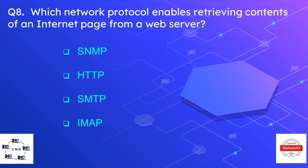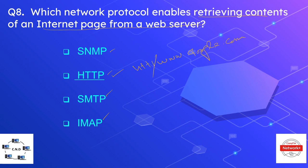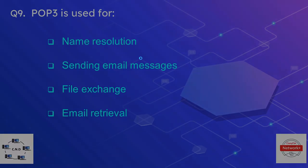Question number eight is: which network protocol enables retrieving contents of an internet page from a web server? The options are SNMP, HTTP, SMTP, and IMAP. The correct option is HTTP, or Hypertext Transfer Protocol. It is used to retrieve content of internet pages from a web server — for example, when we type www.google.com in our web browser, the protocol used is HTTP, and its secure version is HTTPS.